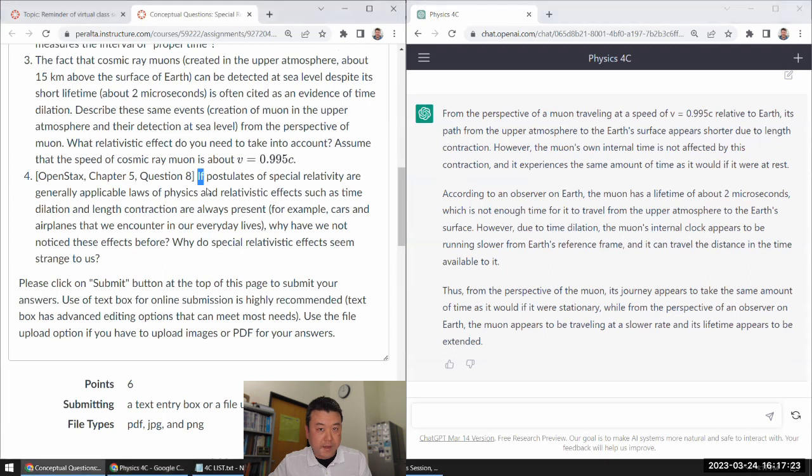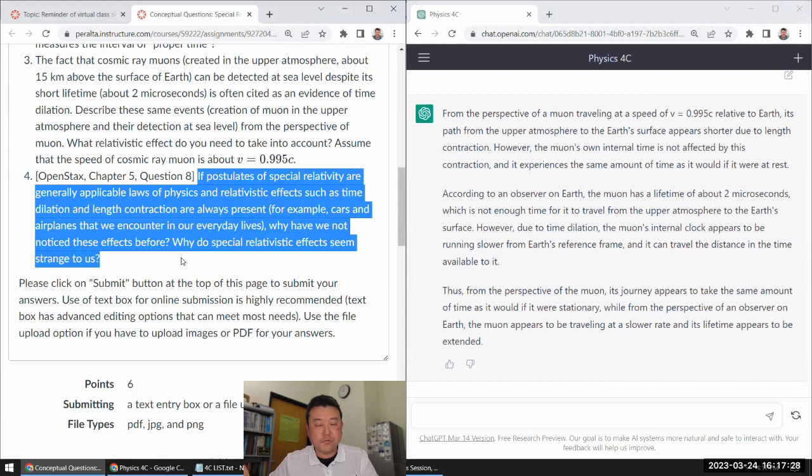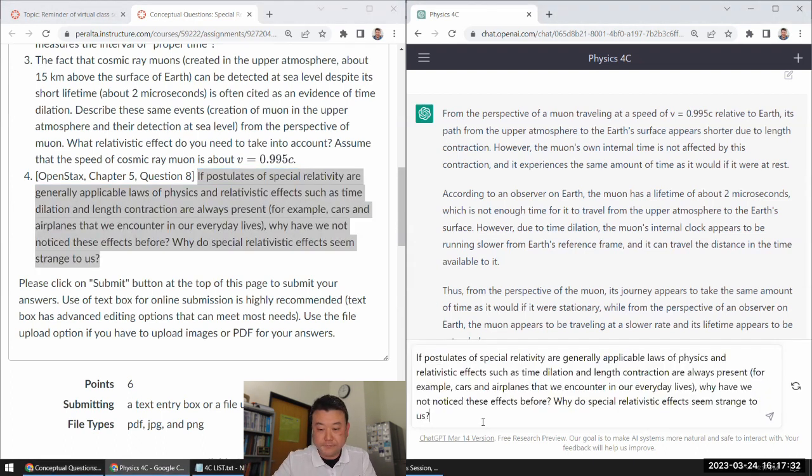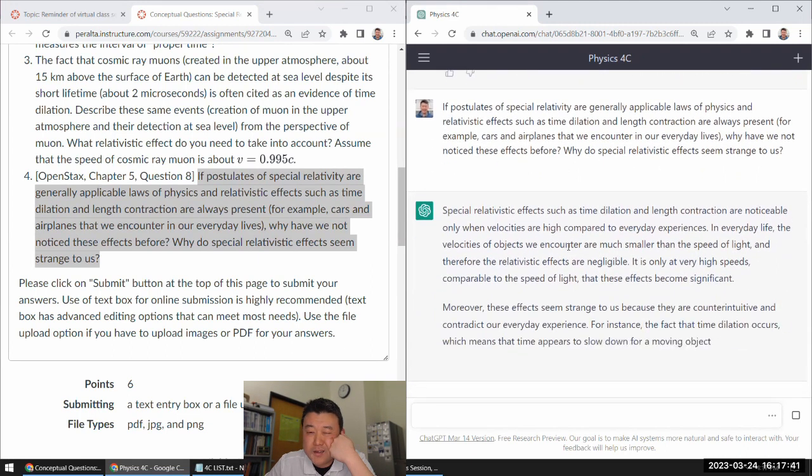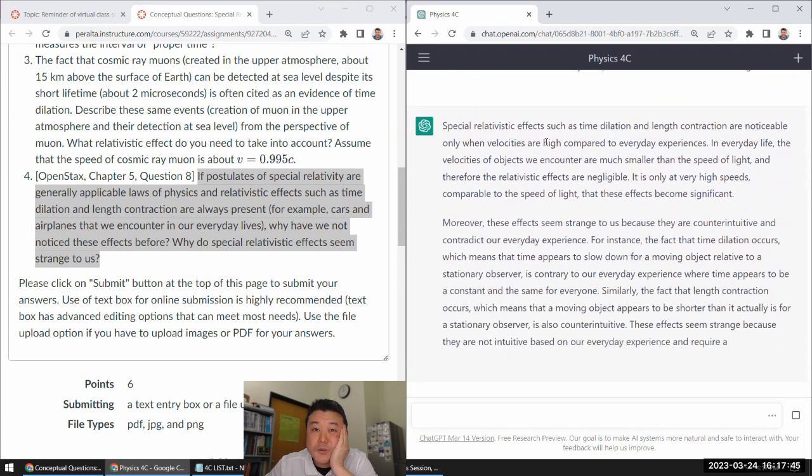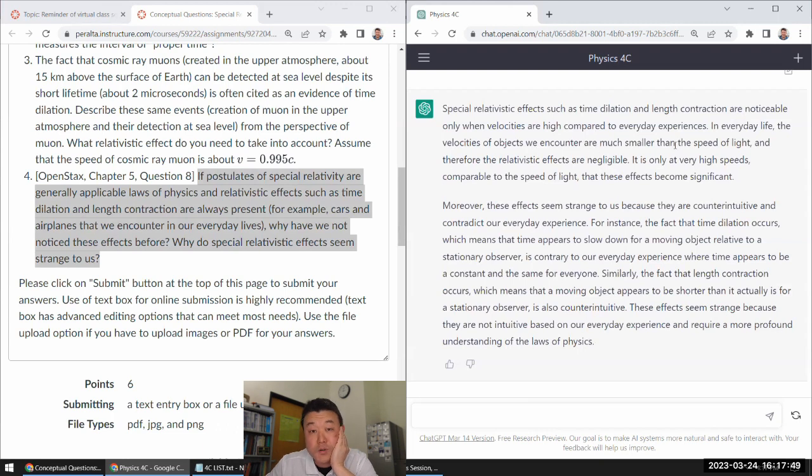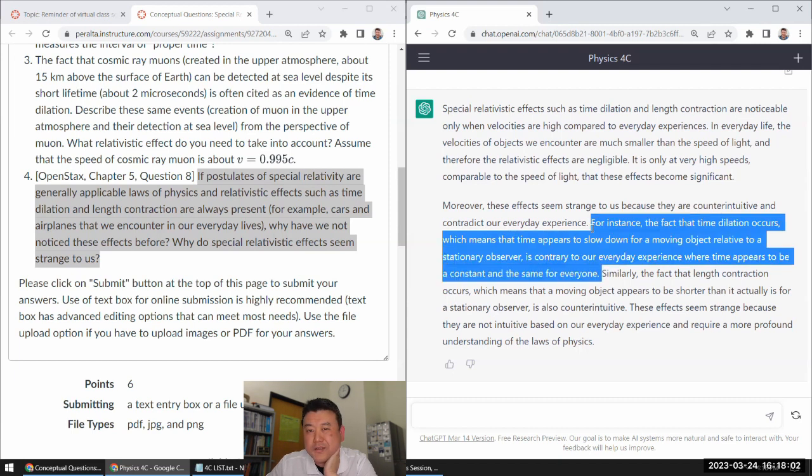Let me do the fourth and the last question and see if ChatGPT will get 2 out of 4 right or 3 out of 4 right. General physics, why have we not? Oh, I think it's going to get it right. It's a pretty easy question. Yeah, noticeable only, yeah, high compared to, yeah, are much smaller than speed of light. Therefore, yeah, moreover these effects, same strength, counterintuitive. Yeah, sure. But I don't think that's really the counterintuitive and contradictory part, because I think people understand time dilation well enough. It's more of a finer point, more nuanced points that we'll cover, I think, next week. I think the contraction occurs, yeah.